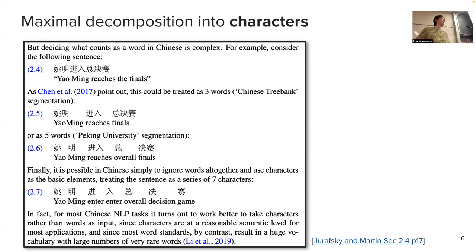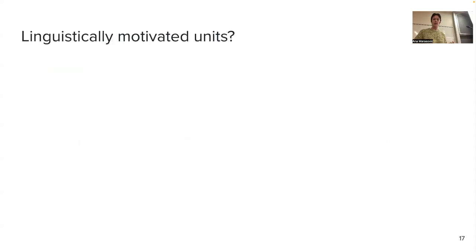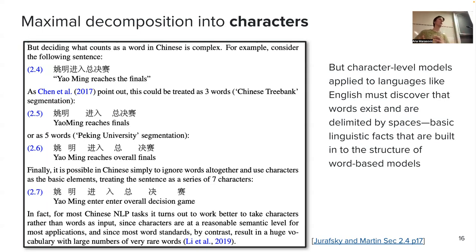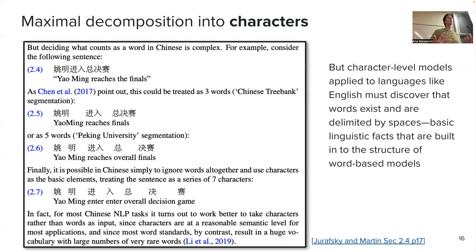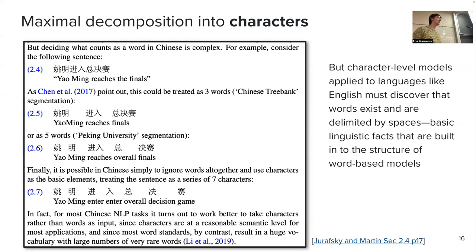So words don't work universally, characters don't work universally. Can we use linguistically motivated units? Whatever we choose as our token unit matters — later we do linguistic annotation where annotators label each unit as verb, adjective, etc. Linguistically motivated units sound appealing, but it's hard to consistently define the best linguistic unit given all the phenomena we've seen. I get very excited about tokenizers — I might be rushing a little.